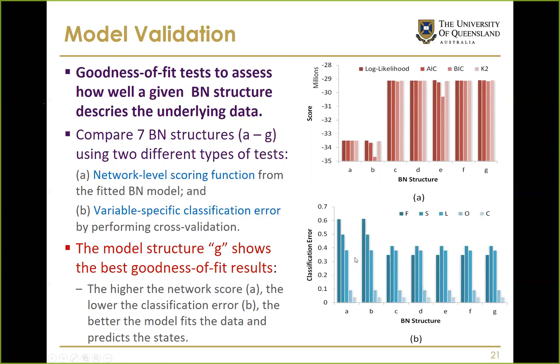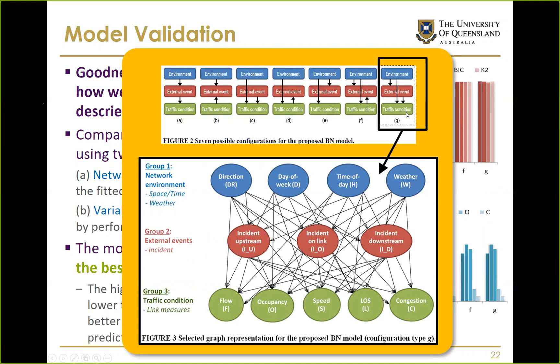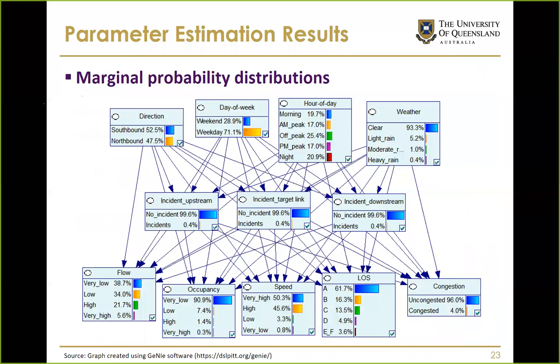After comparing all candidates, model G gave the best result. In this structure, external events are affected by environmental variables, and traffic condition is affected by both environmental variables and external events directly. This makes sense: traffic conditions can be directly affected by time of day, day of week, or weather, but are certainly also affected by incidents.